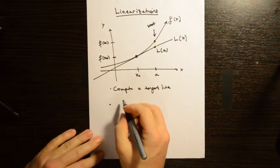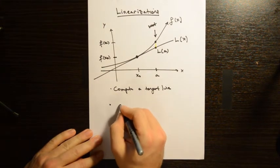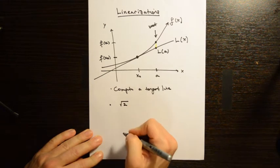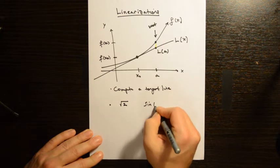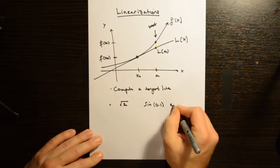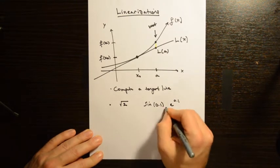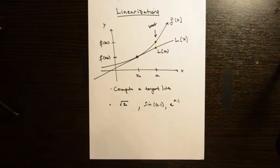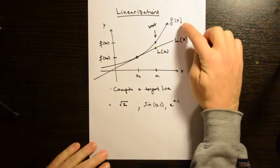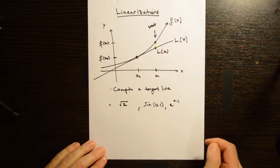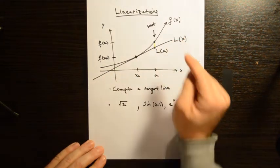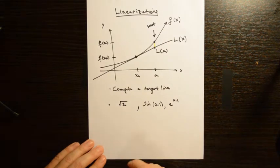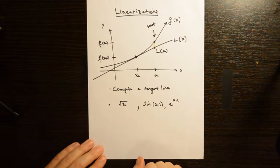If someone says I want you to use a linearization to estimate the square root of 2, or to estimate the sine of 0.1, or to estimate e to the 0.1, you have to choose the correct function f of x and the correct point x₀ that you want to compute the tangent line about, to find the linearization L of x that's appropriate to solve the given problem.